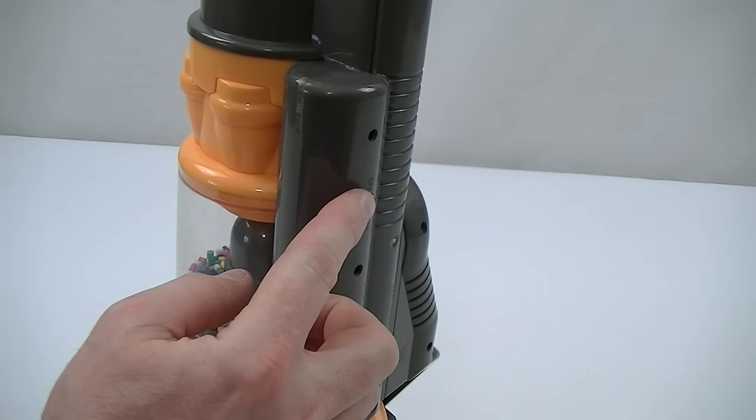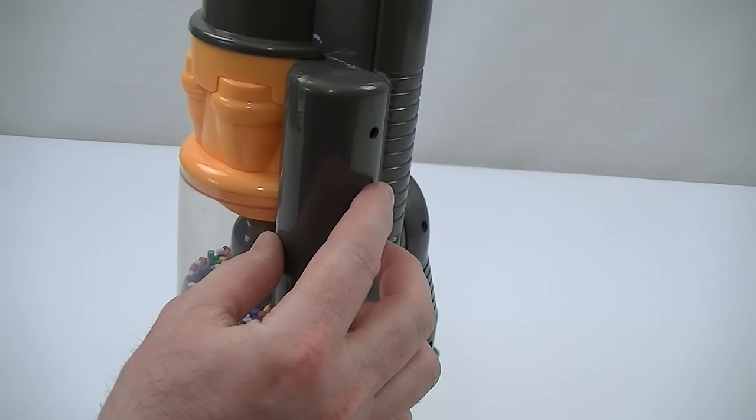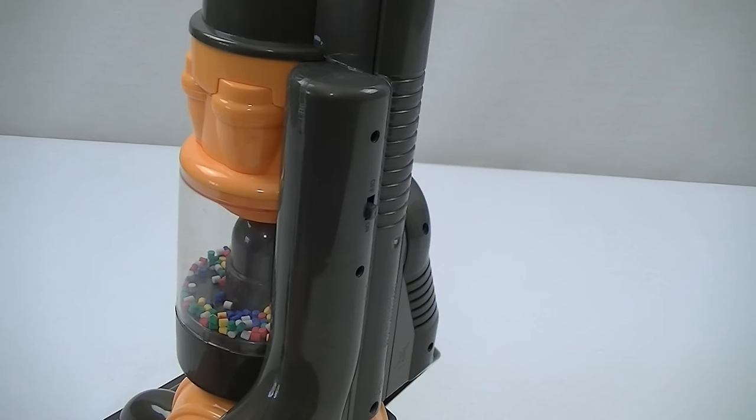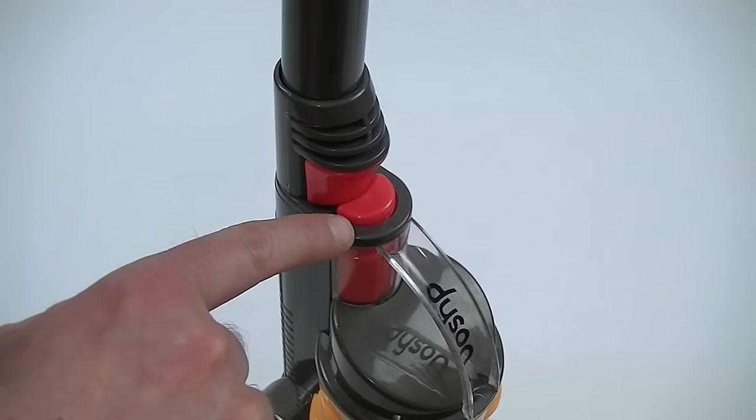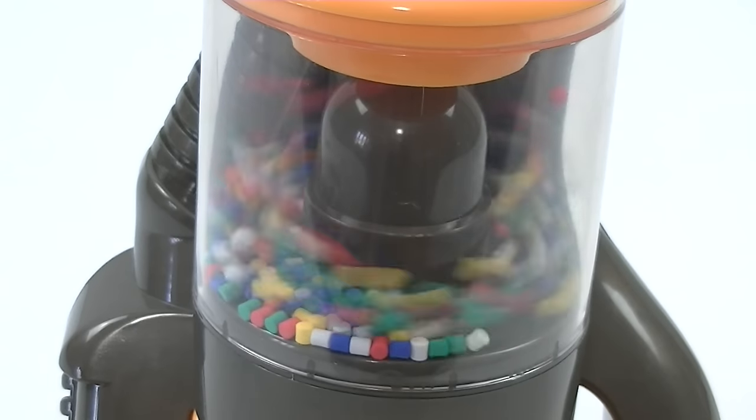At the back of the cleaner, there's a little on-off switch that controls the suction motor. And just above the dirt bin, we've got this red button that controls the cyclonic action.